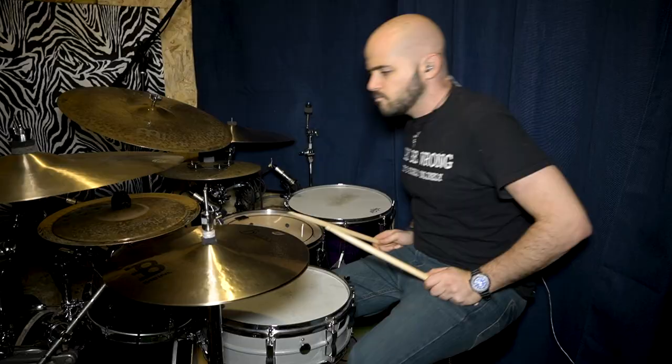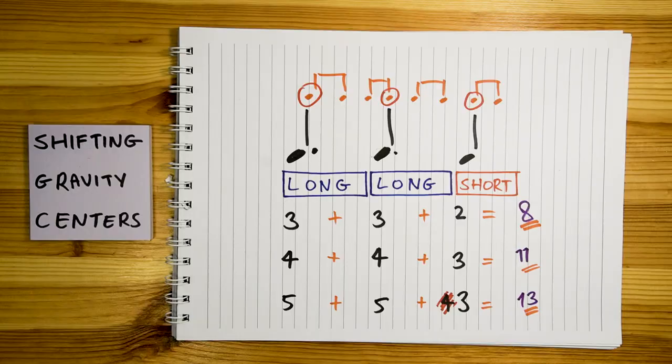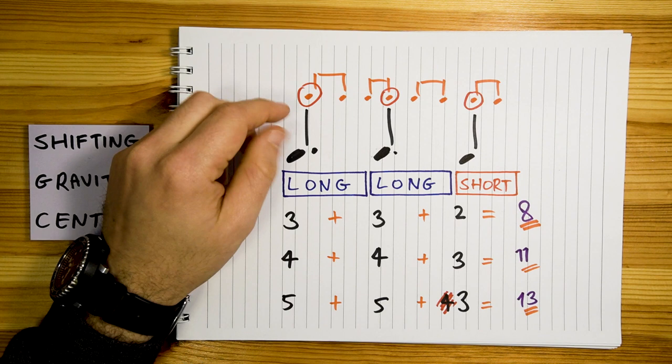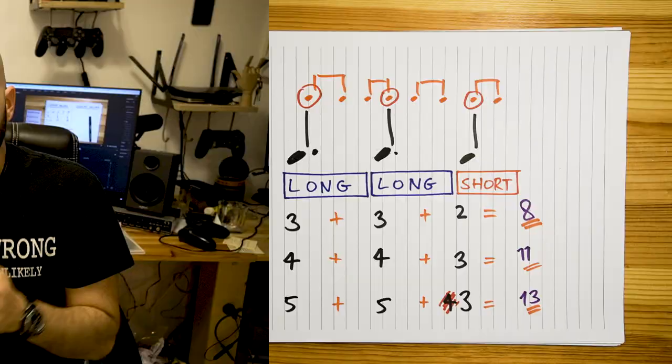By keeping the long-long-short structure intact and not changing it, the feel of the initial clave stays — which is why this 11 or 13 over 8 doesn't sound that weird. Let's see if we can play them one after the other. Notice that you're gonna feel like it's speeding up but staying in the same tempo at the same time. It's pretty cool.